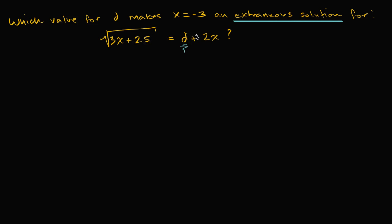Now how do these extraneous solutions pop up? Well, it pops up when you take the square of both sides. So for this equation, to get rid of the radical, I'd want to square both sides. If I square both sides, the left-hand side will become three x plus 25, and the right-hand side is going to be d squared plus four d x plus x squared.